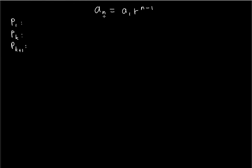P1 basically means that the n value will be substituted with 1. So P1 is going to be a_1, because we're substituting n with 1. So a_1 is equal to a_1 times r to the power of 1 minus 1. The Pk statement says that a_k — substituting n with k — is equal to a_1 times r to the k minus 1.